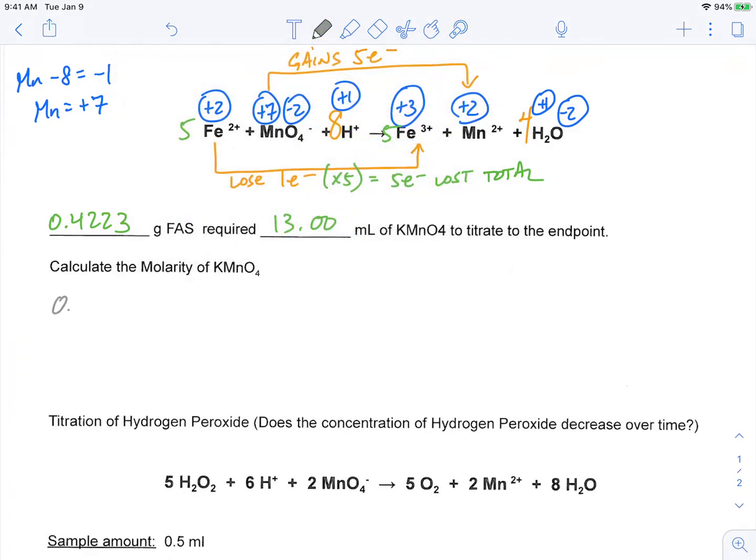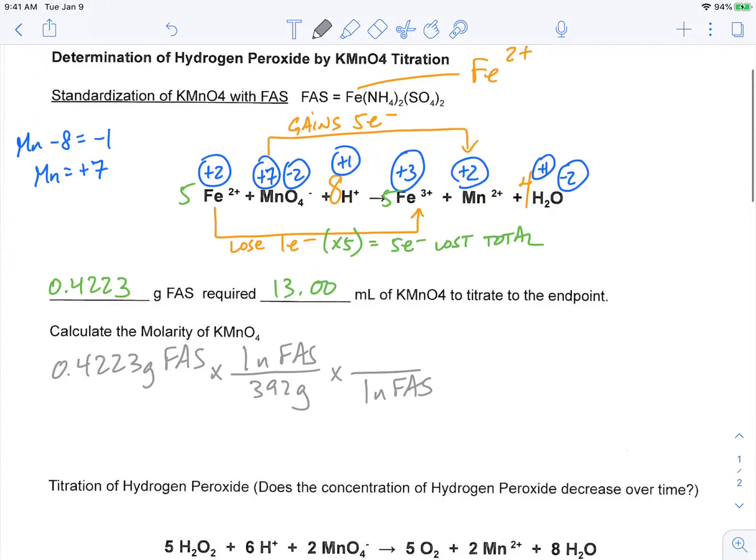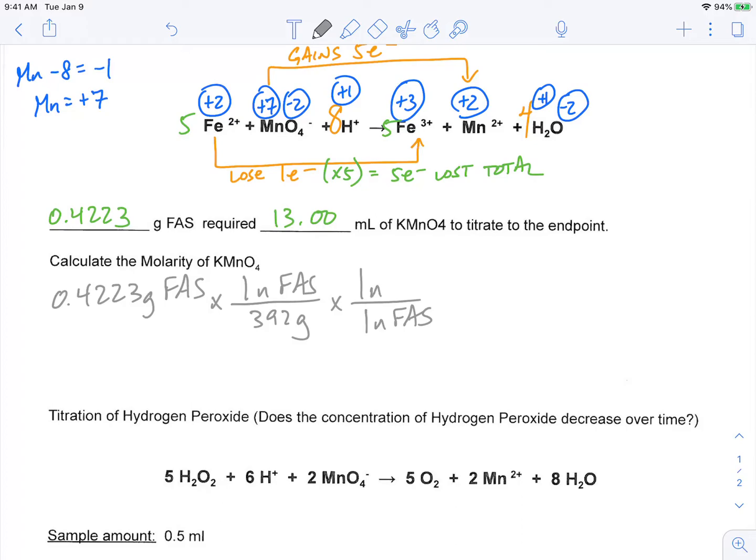So I know I have 0.4223 grams of FAS, and I want to figure out how many moles that is. So for every one mole of FAS, how many moles of the iron ion are present? Now this happens to be a one-to-one ratio; there's one iron ion in this molecule here. But that may not always be true, so it's good to include that into our calculations. So for every one mole of Fe2+, we can now convert or compare our moles of Fe2+ to moles of KMnO4.